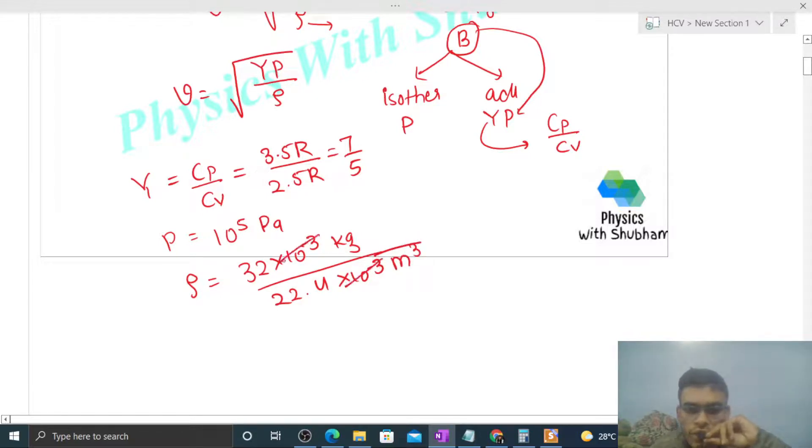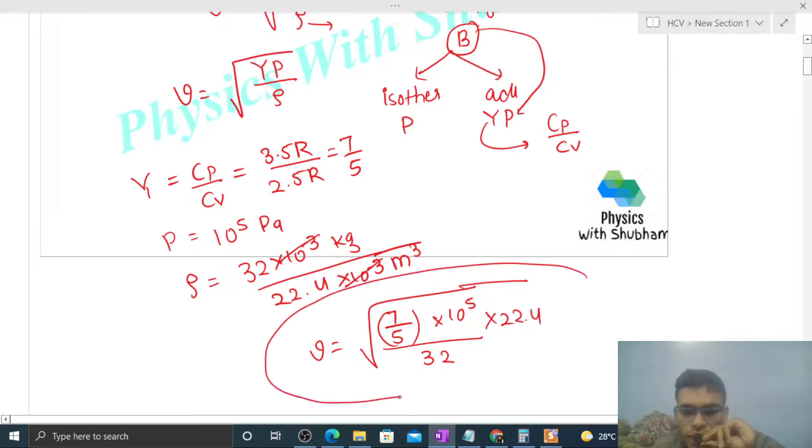So dekho, yahan se ye cancel ho jayega minus 3, minus 3. So jho speed aayega, that will be under root of gamma value, 7 by 5, pressure value 10 raise to the power 5 divided by density, that will be 32, and this 22.4 will go to numerator and multiply. So this value you can calculate, numerical answer you can find out. This will be speed of sound wave in SI units, that is meter per second.